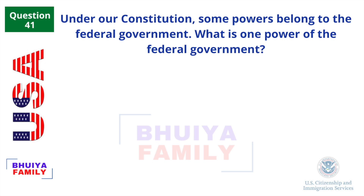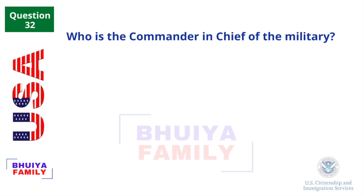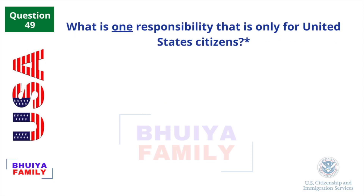Under our Constitution, some powers belong to the Federal Government. What is one power of the Federal Government? To print money. Who is the Commander-in-Chief of the military? The President. What is one responsibility that is only for United States citizens? Serve on a jury.